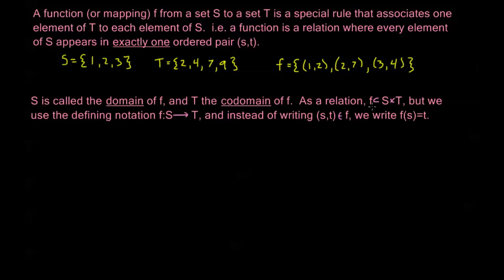Now, as a relation, if we write it the same way we've been writing it, we would write that f is a subset of S × T. But instead, for functions, we use a special notation, and we define a function f from S to T in this way, with f followed by a colon, and then S → T. That means it's a function from S to T, opposed to just a regular relation from S to T.